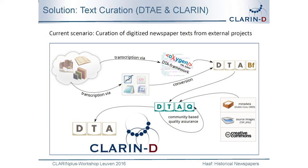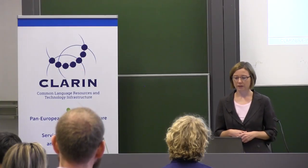This graphic shows the workflow we are performing. Texts get into the DTA in very different formats and we convert them into our DTA-based format, which is TEI XML. Then they land in our quality assurance platform, go through quality assurance steps — metadata, source images — everything is added, and then we publish them on our platform and within CLARIN-D.